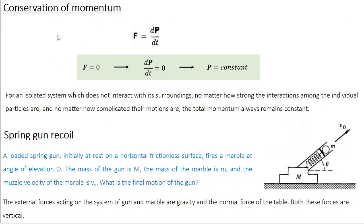Now let's move on to another very important principle in classical mechanics: conservation of momentum. For a multi-particle system, F = dP/dt, where F is the total external force and P is the total momentum. If F = 0, then dP/dt = 0, meaning P is constant. This is conservation of linear momentum: when the total external force on a system is zero, the total momentum remains constant.